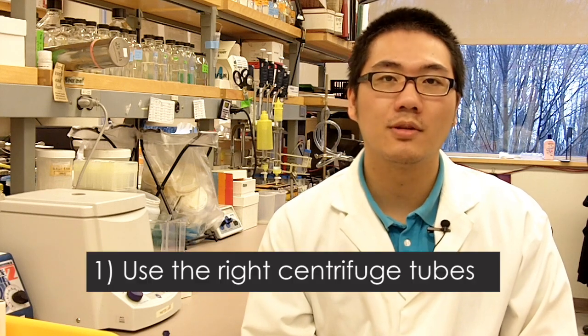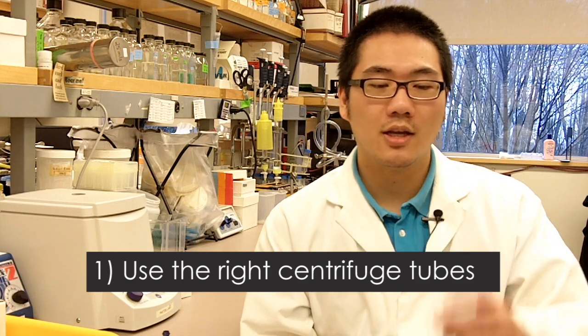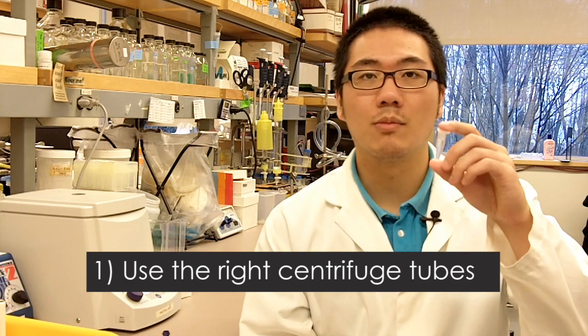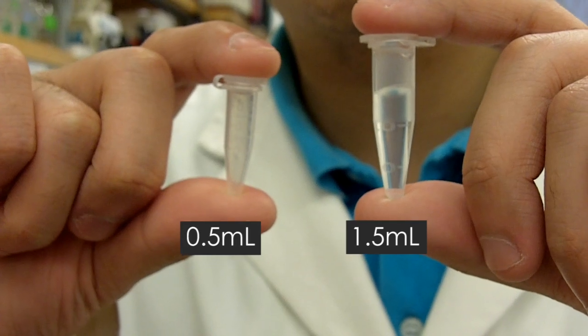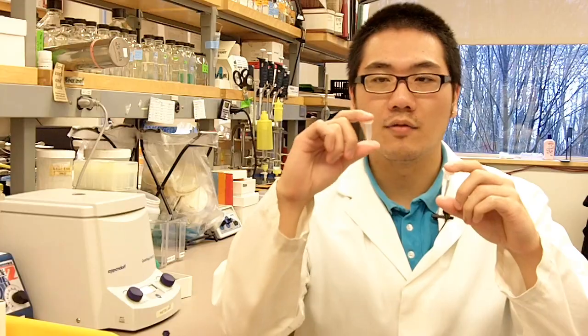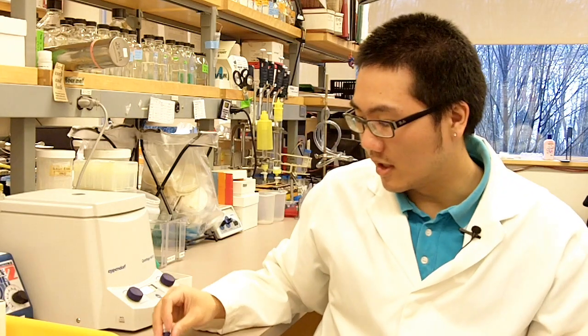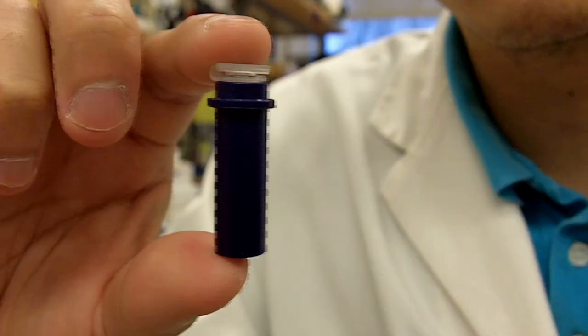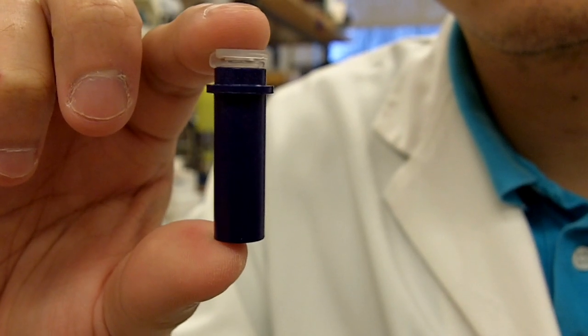The first thing you need to know when you use a centrifuge is to make sure you use the right size of tube for the right centrifuge. Here is a commonly used 1.5 mil microfuge tube that fits in most of the tabletop centrifuge. Here is a half mil microfuge tube that would also fit into the centrifuge. But if you use this one, you'll have to use an adapter. So you place it in the adapter like that and use it. If you don't, the tube might break.